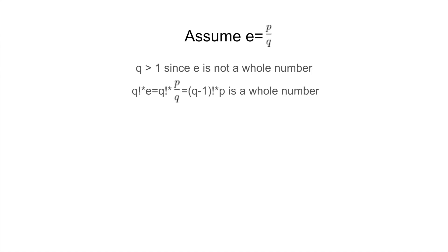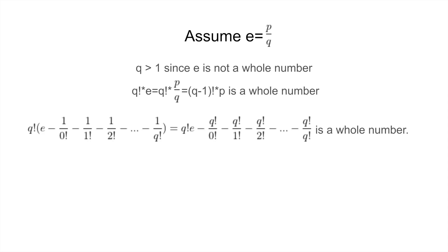Then q factorial times e is clearly a whole number. So therefore, q factorial times e minus 1 over 0 factorial minus 1 over 1 factorial minus 1 over 2 factorial, all the way up to minus 1 over q factorial, is equal to q factorial times e minus q factorial over 0 factorial minus q factorial over 1 factorial, all the way up to minus q factorial over q factorial. And since every single one of the terms is a whole number, it itself is also a whole number.